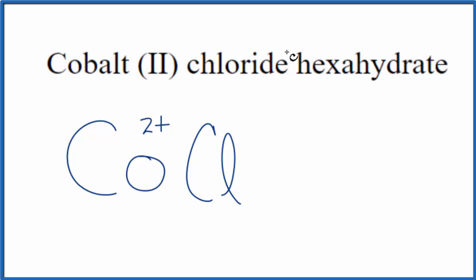So let's do this in two steps. First, we'll write the formula for cobalt chloride. Then we'll add the hexahydrate. So cobalt chloride. Cobalt, that's a metal. Chlorine, that's a non-metal. So we've got to balance the charges.